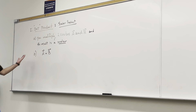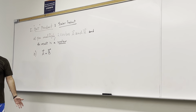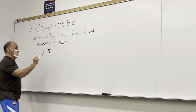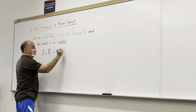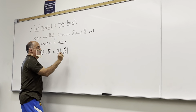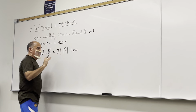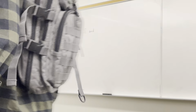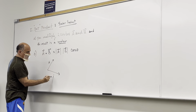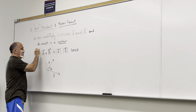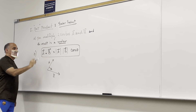When you multiply these two vectors you get a number. How do you get that number? You multiply the magnitude of one vector by the magnitude of the other vector and by the cosine of the smallest angle between those two vectors. So if this is vector a and this is vector b, theta is the smallest angle between them.